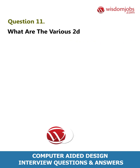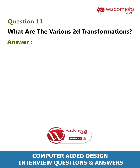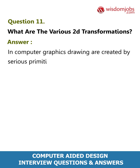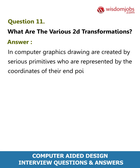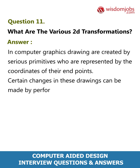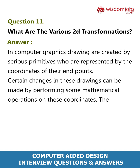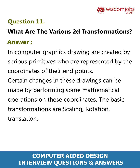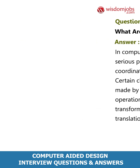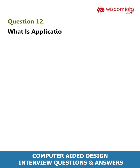Question 11: What are the various 2D transformations? Answer: In computer graphics, drawings are created by series of primitives which are represented by the coordinates of their endpoints. Certain changes in these drawings can be made by performing some mathematical operations on these coordinates. The basic transformations are scaling, rotation, translation, etc.